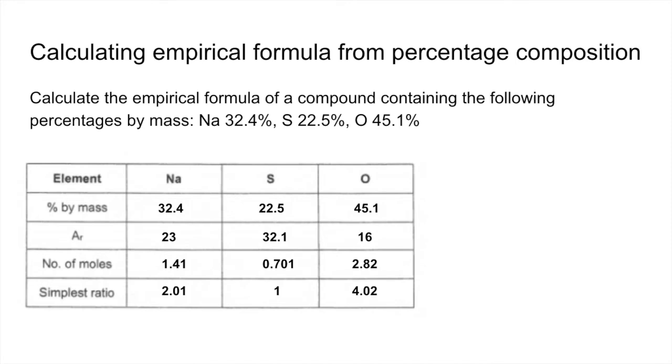Now, the 2.01 is so close to the 2, we can just assume that that is 2. Whereas in the previous one, it was 1.5. We couldn't round that up to 2. We had to multiply out. We don't need to multiply out in this one. So it's just Na2SO4.